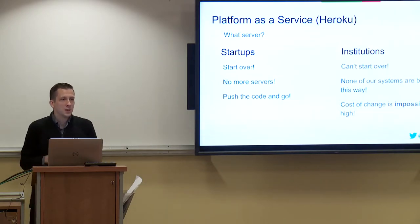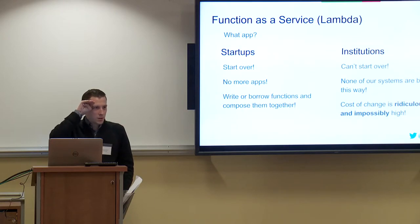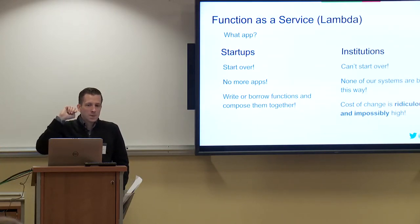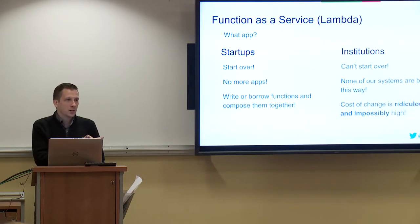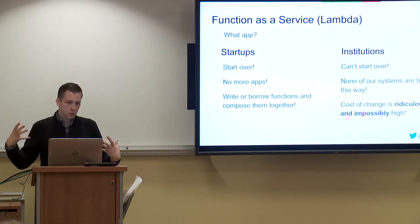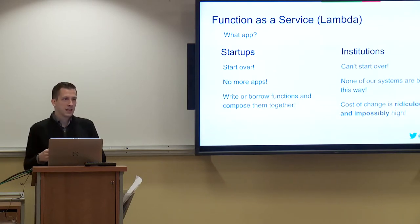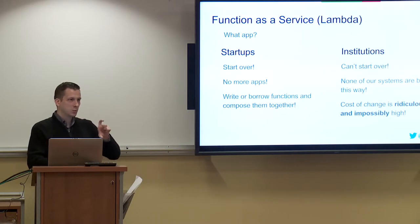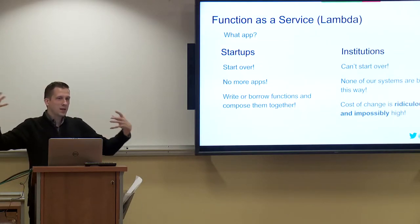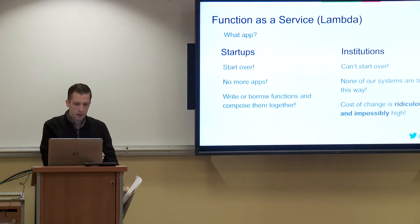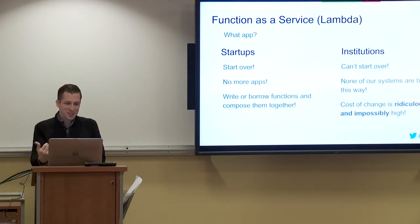Now cost of change is actually impossible. And looking into the near future — has anybody heard of Functions as a Service or Amazon Lambda? It's getting even weirder. Now the question isn't what's a server, it's what's an app. Instead of building code bases, you could potentially write or borrow individual functions that do one single thing — like get me all the results for this geographical region. That's one function, composed with others to make an app, but not the same kind of thing we mean when we say app. But institutions can't start over and none of our systems are built this way — now it's ridiculous and impossible.